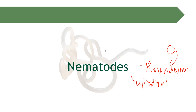Cestodes, the next topic that we are going to discuss, are helminths whose body is segmented. In our nematodes, they are cylindrical, they are rounded, but they are non-segmented. Their body is continuous — it is one continuous body.